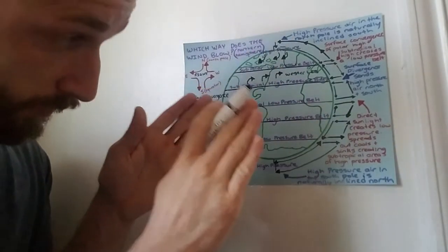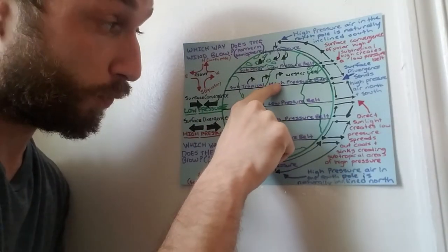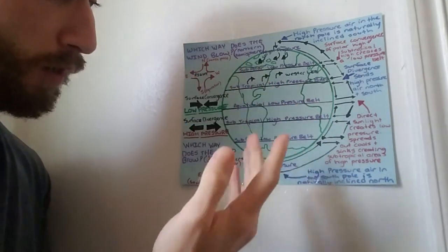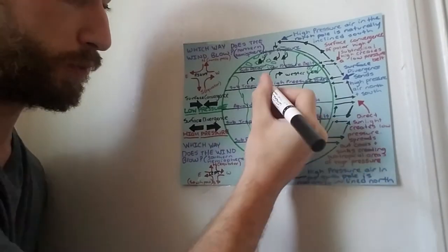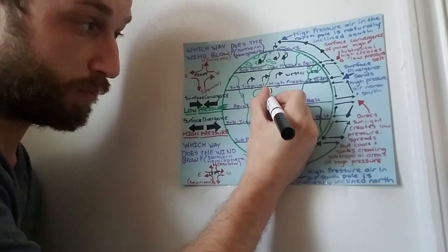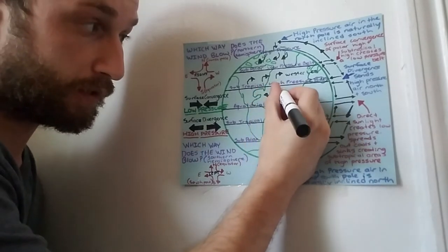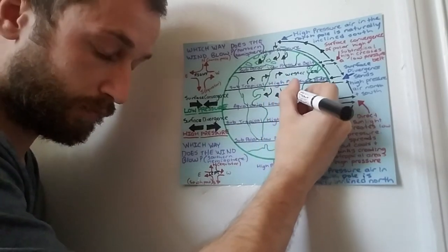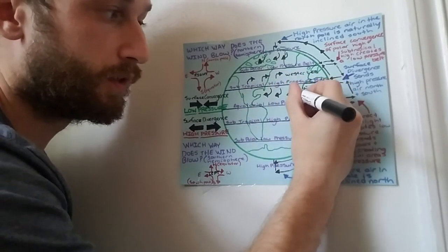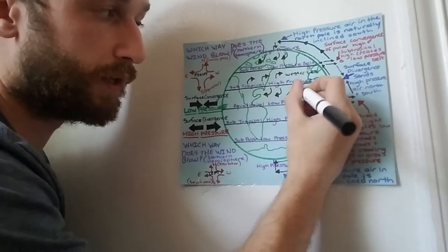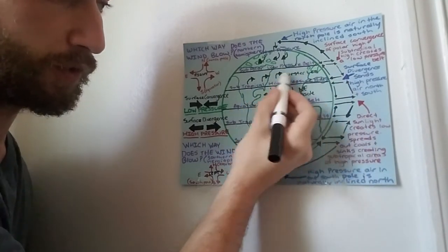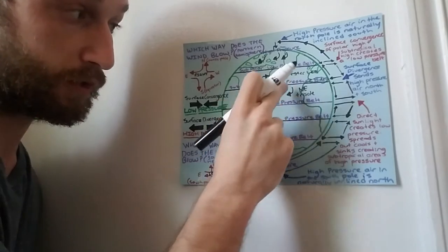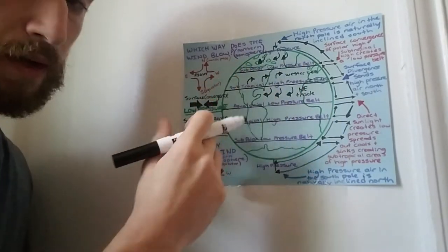Winds traveling from the subtropical high pressure belt down to the equatorial low pressure belt also turn right because we're still in the northern hemisphere. They're coming from the north, so they are called the northeast trade winds — named because they come from the northeast. They go from a high pressure system, naturally inclined toward a lower pressure system, and bend to the right.